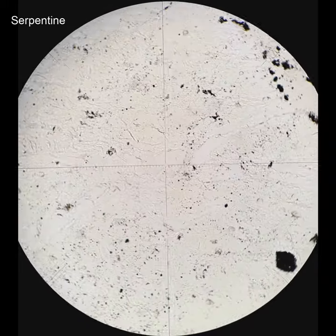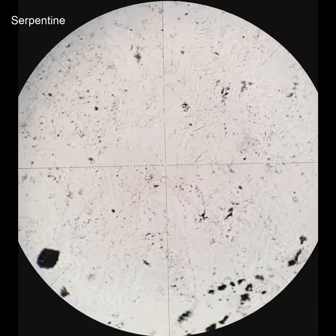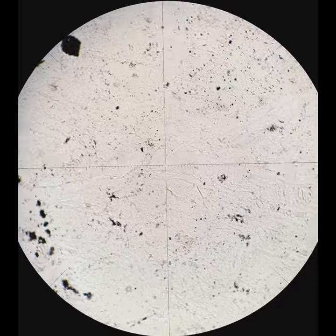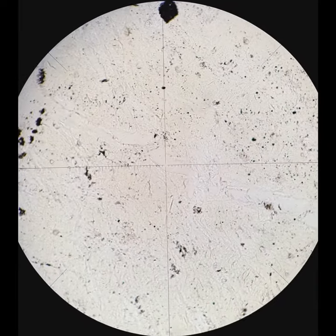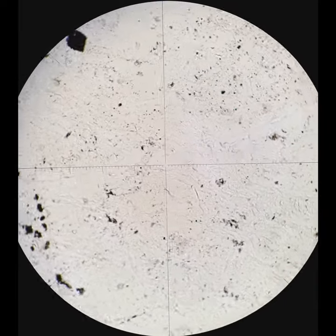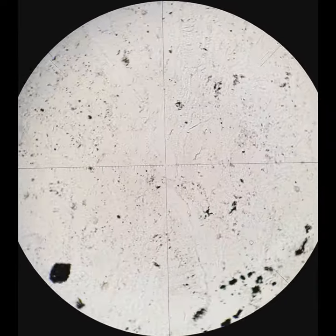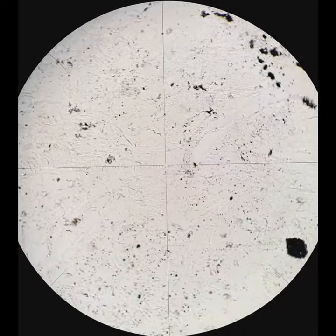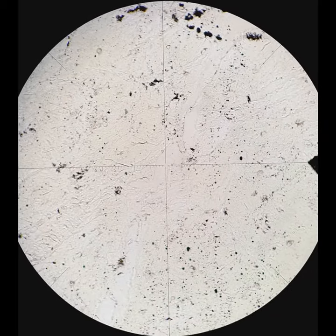Serpentine is a really important mineral in the world, especially in subduction zones. I confess I find it kind of boring in thin section — it doesn't have very much color, although it can be very pale green.